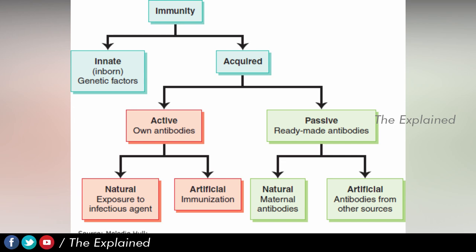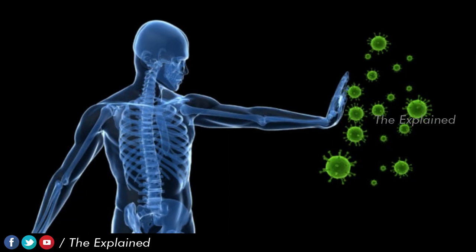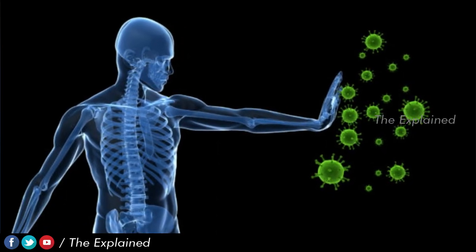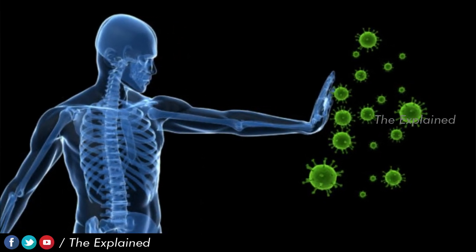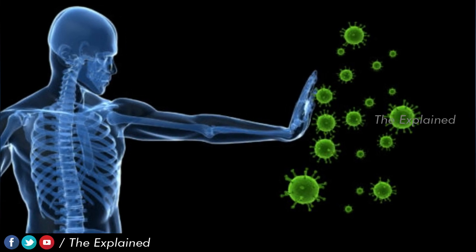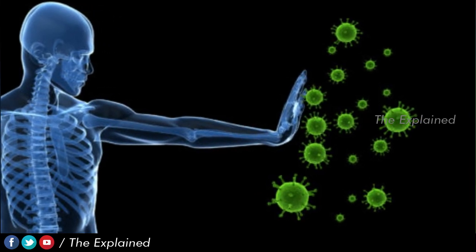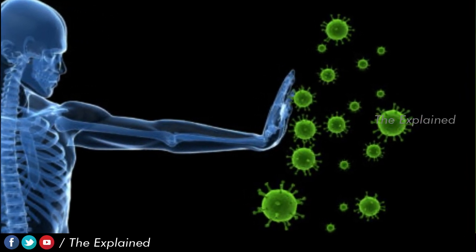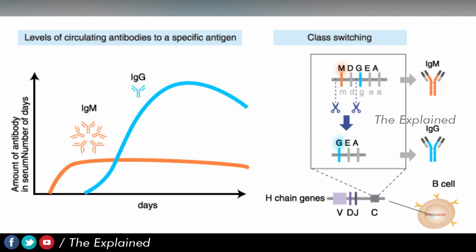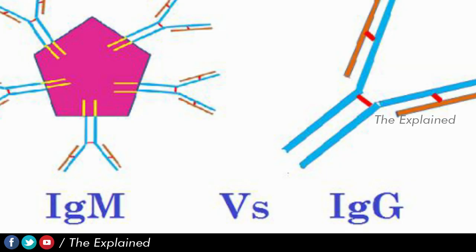The other is acquired immunity, which is artificial. That is, if we take vaccines, we can build up the immune system. For example, a number of components are involved in the immune system, and if it is healthy, the immune system works properly with antibodies.